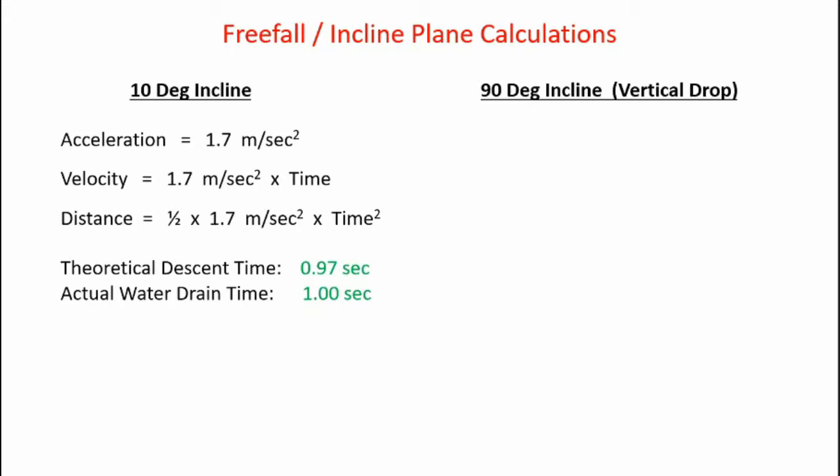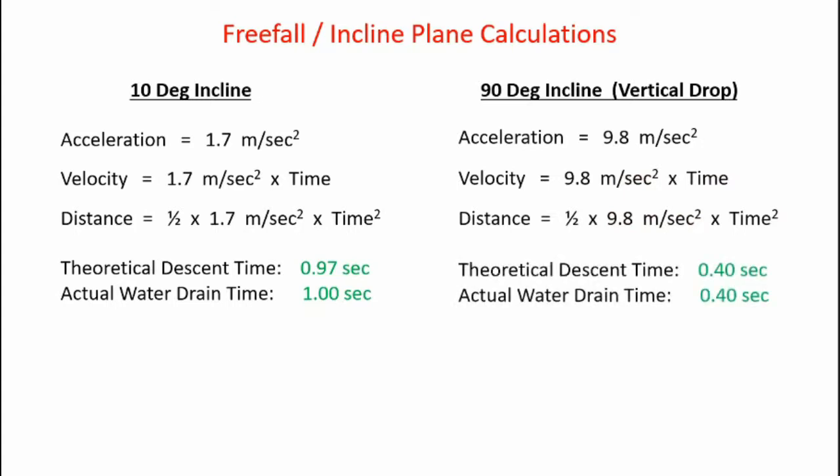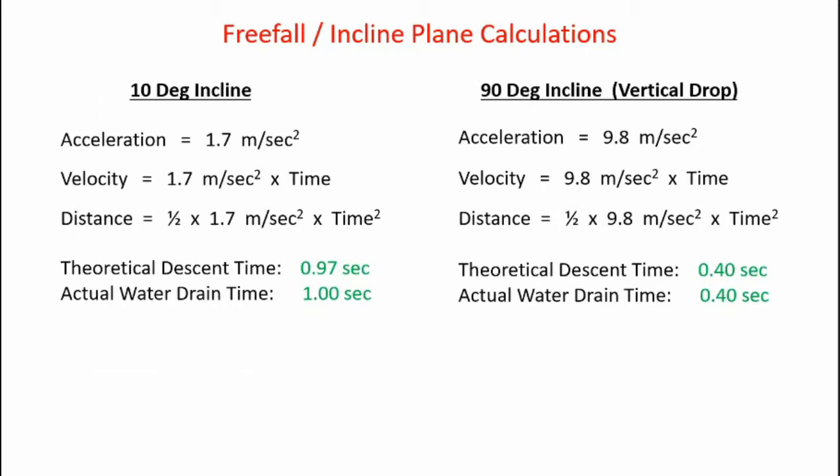For a vertical 90 degree incline, here's the acceleration, velocity, and distance equations. I get a theoretical descent time of 0.4 seconds and actual water drain time of 0.4 seconds. So in conclusion, the water does indeed move in exactly the same way as a frictionless mass descending along an inclined plane.